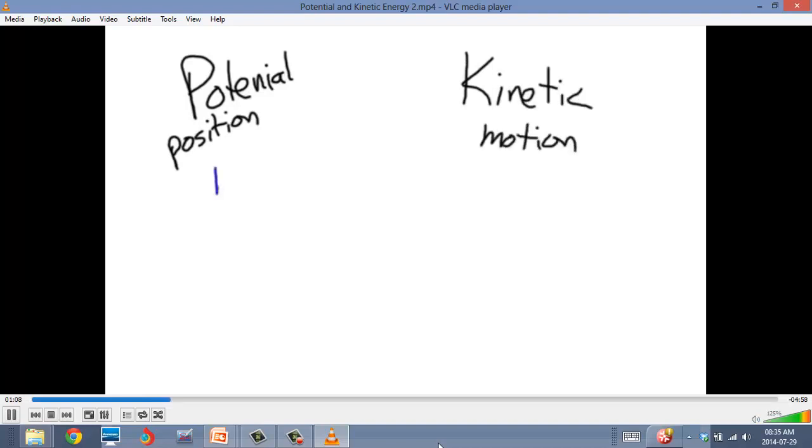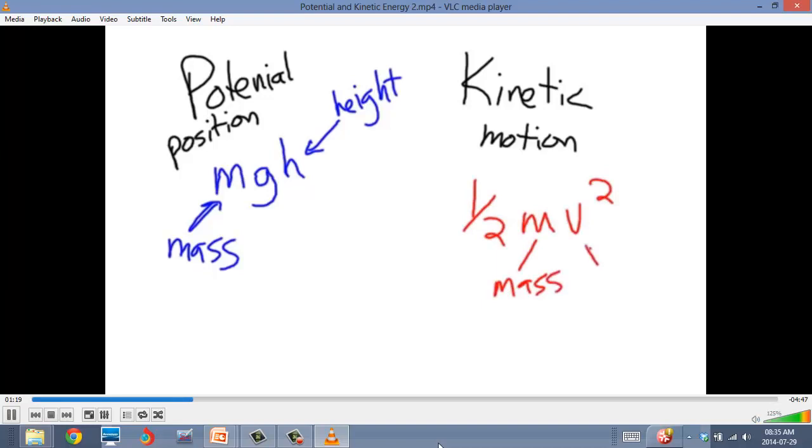And we have equations for each of these. Potential energy is mgh, where m is mass, g is gravitational acceleration, and h is the height. And then kinetic energy is one-half mv squared, where m is mass, and v is the velocity of the object.